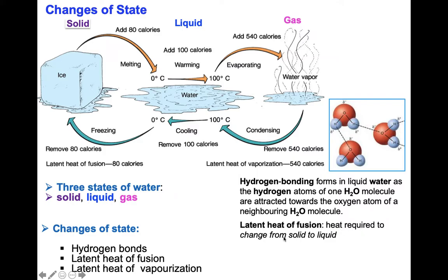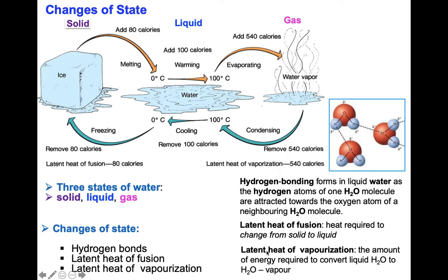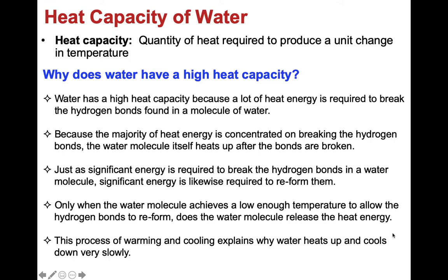Latent heat of fusion is the amount of heat required to change from solid to liquid — 80 calories. We also have latent heat of vaporization, which is the amount of energy required to convert liquid water into water vapor. This unique bond structure of the water molecule makes water a very unique material with very high heat capacity. The high heat capacity comes from the fact that it takes lots of energy to break the hydrogen bonds in a molecule of water.